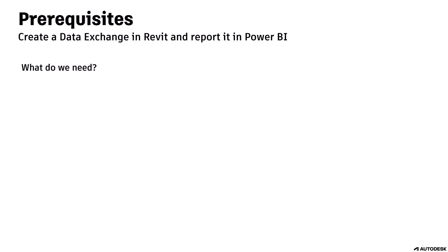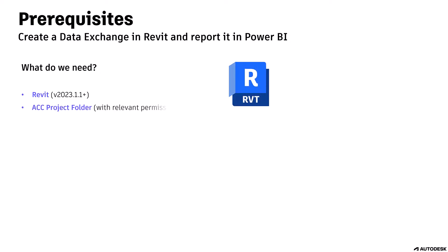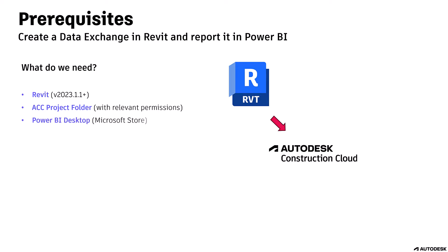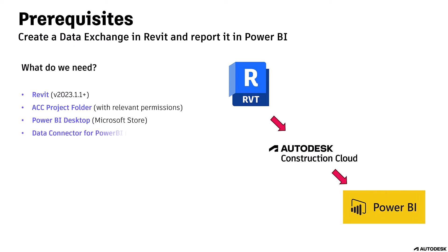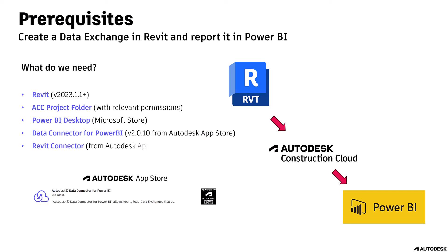Let's get started. What do we need? You will need Revit 2023.1 or higher, an ACC project folder with the relevant permissions to store the created data exchange files, Power BI — which in most cases can be obtained from the Microsoft Store on Windows — the data connector for Power BI from the Autodesk App Store, and the Revit connector, also from the Autodesk App Store.